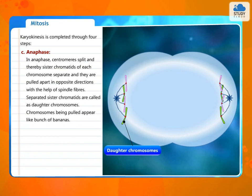Chromosomes being pulled appear like a bunch of bananas. In this way, each set of chromosomes reach at two opposite poles of the cell.